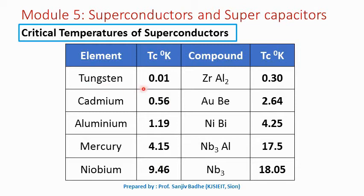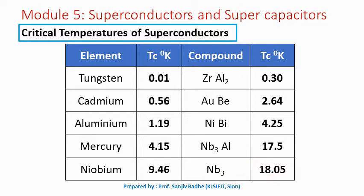Critical temperatures for some substances: tungsten has Tc of 0.01 K, cadmium 0.56 K, aluminium 1.19 K, mercury 4.15 K, niobium 9.46 K. Compounds like ZrAl2 have 0.3 K, AuBe 2.64 K, NiBi 4.25 K, Nb3Al 17.5 K, and Nb3 has a critical temperature of 18.05 K.